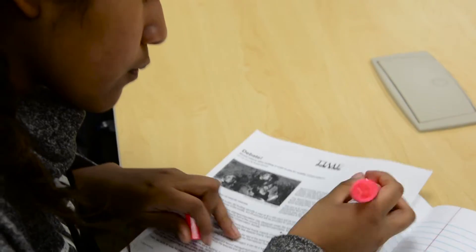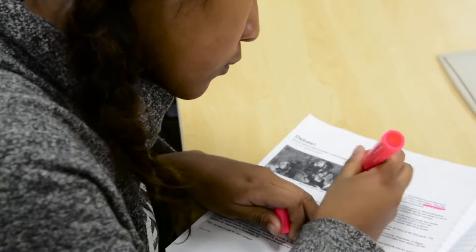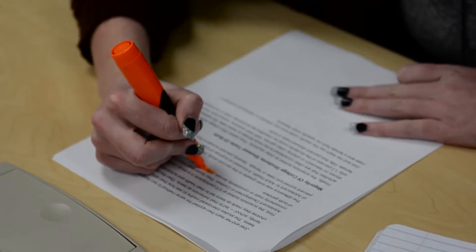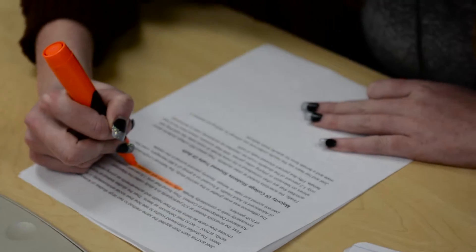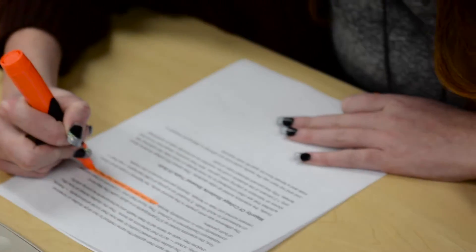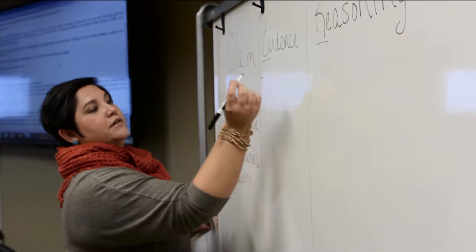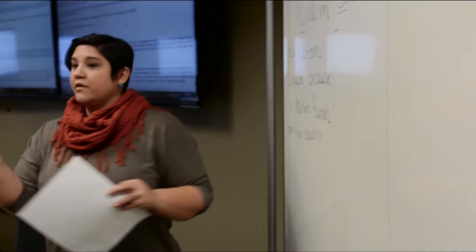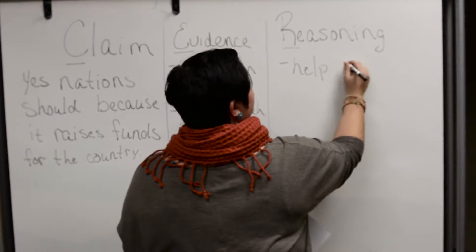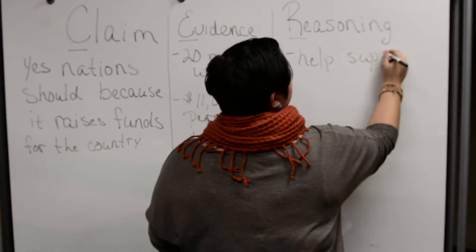I like to find nonfiction articles about current events, and we sit down with that article and they use highlighters to highlight the claim, the evidence, and the reasoning. Then we actually start evaluating an argument — we look at the author's claim, evidence, and reasoning to decipher whether or not it's a strong argument.